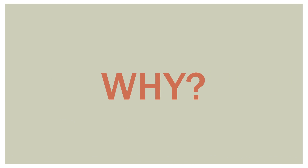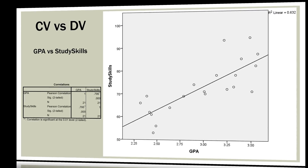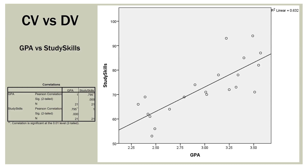Now, the question is why. Why did this happen? Here is the relationship between our covariate and our dependent variable — GPA versus study skills. You can tell right off the bat that there is a very strong linear relationship between our covariate and our dependent variable. The correlation is 0.795 — an extremely high, significant correlation. When we have a covariate that is this linearly related to our dependent variable, it is going to, in almost all cases, gobble up or explain a large amount of that variance in the dependent variable. The reason the GPA covariate had such an effect is due to this linear relationship between the covariate and the dependent variable.